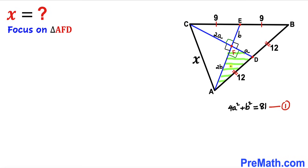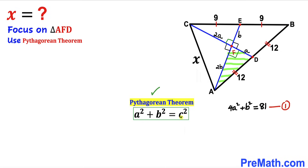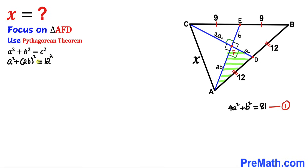Let's focus on the right triangle AFD whose side lengths are 12, a, and 2b. Using the Pythagorean theorem again: a² + (2b)² = 12², so a² + 4b² = 144. Let's call this Equation 2.